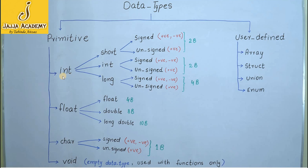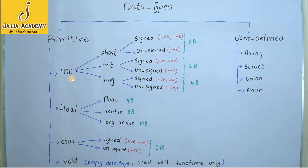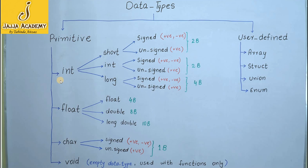The keyword int is used to represent the integer data type, and it is further divided into three subcategories: short, int, and long. The integer data type is used to store numeric data. It cannot store fractional values — it can store only whole numbers, which are numbers that do not have a fractional or decimal part.